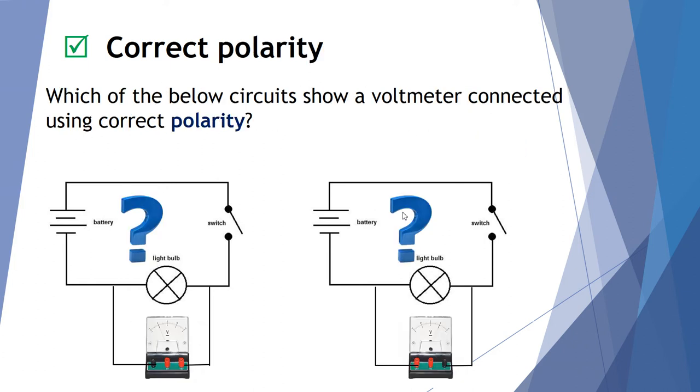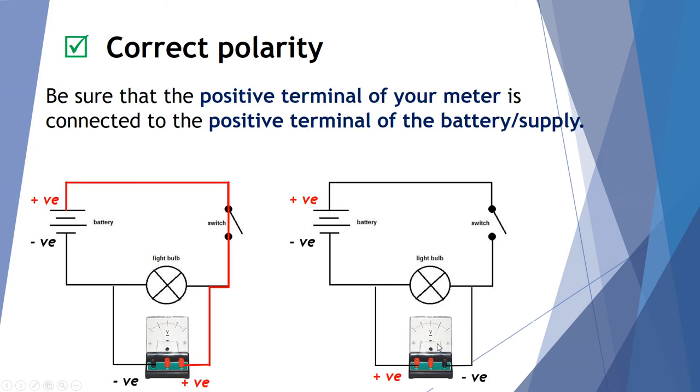Now looking at polarity. Which one of these two voltmeters is hooked up in the correct polarity? Is it the voltmeter here on the left in the first circuit or the voltmeter on the right? Now what we mean by polarity is the positive terminal of the meter is, if we track it back, hooked up to the positive terminal of the battery. Now the big line represents the positive. The negative or the black terminal has got a direct connection to the negative of the battery. And so this is correct.